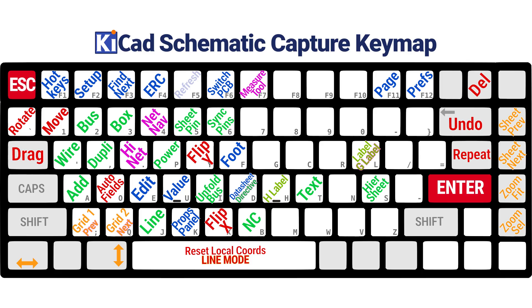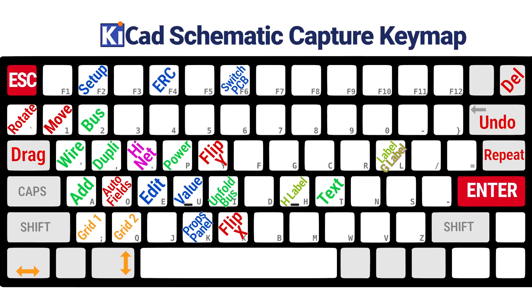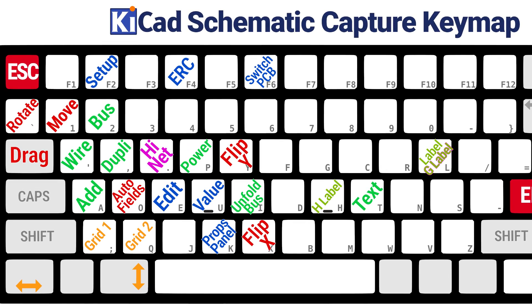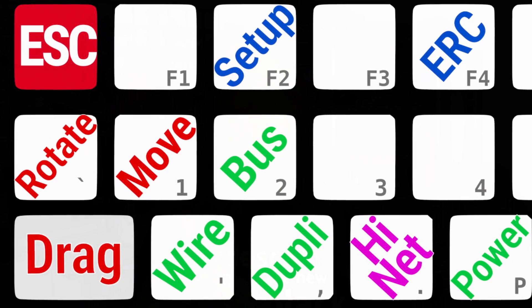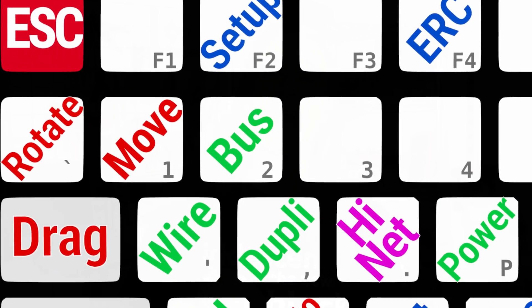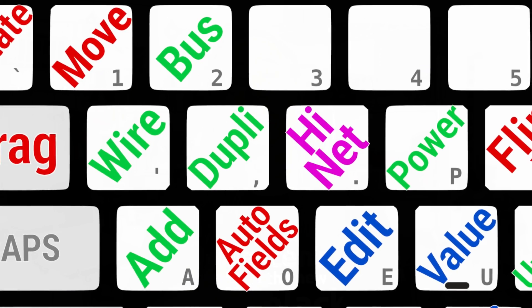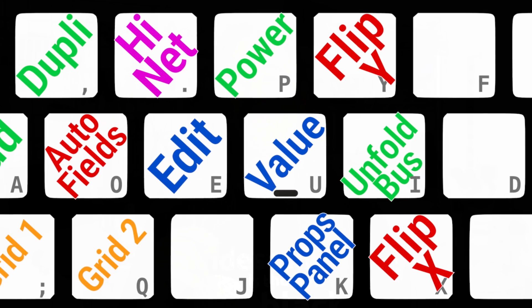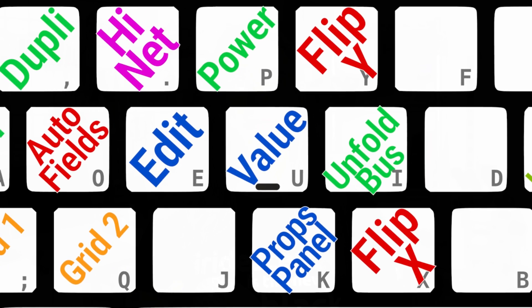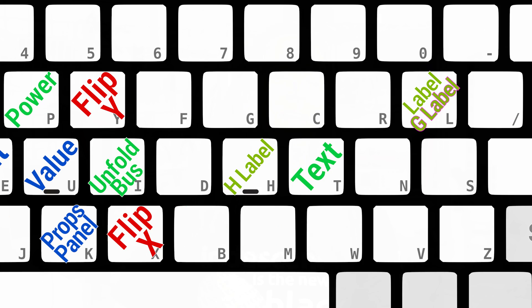Here's a simplified schematic capture key map — set up and learn only these, and I'm sure you'll be convinced to add more soon enough. I'm not saying this is the perfect map, but it's the process that matters — you can customize to your liking. Top left in red is moving things: drag, move, rotate. In green, adding things: wires, components, duplication, buses. In blue, actions that pop up dialogs: properties, value, the props panel. On the right, because I'm right-handed, the text entry stuff where I'll need both hands anyway.